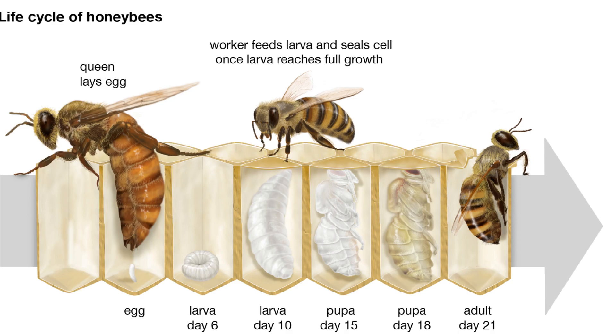Eggs are hatched after 3 days. Now in this case there is a larva stage. The larvae are microscopic, white, without legs and eyes.